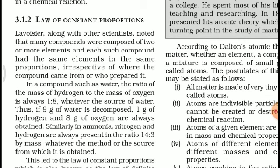Thus, if 9 grams of water is decomposed, we get 1 gram of hydrogen and 8 grams of oxygen, because their ratio is 1:8. Similarly, in ammonia (NH₃), nitrogen and hydrogen are always present in the ratio 14:3 by mass, whatever the method or source from which it is obtained.